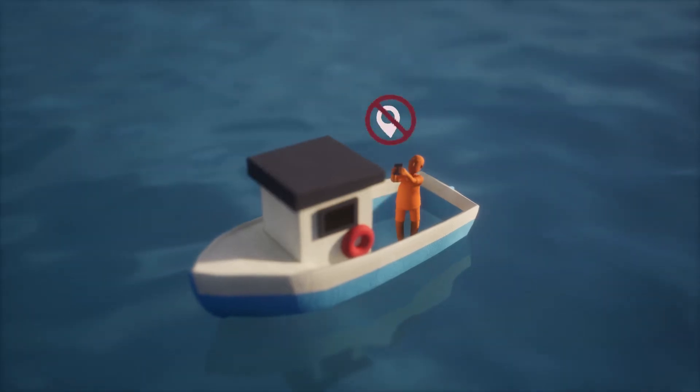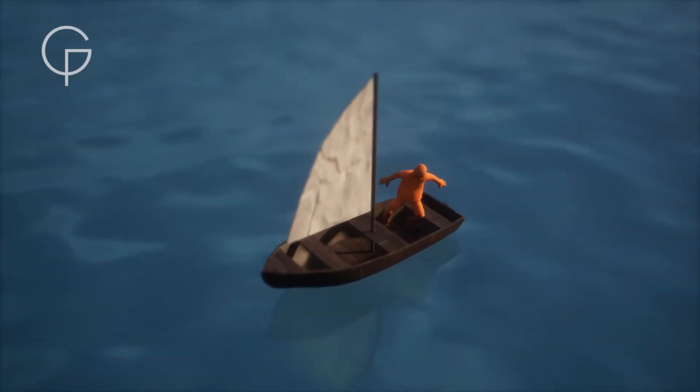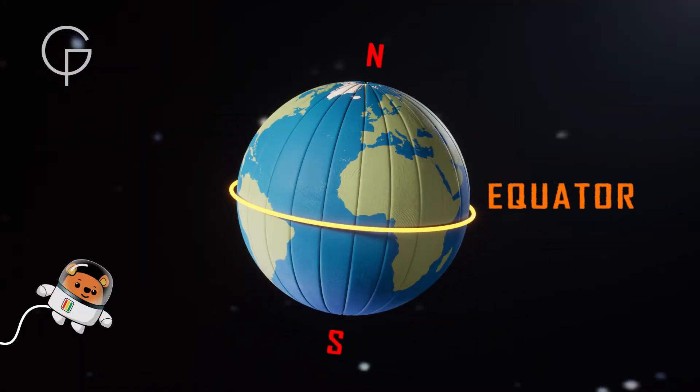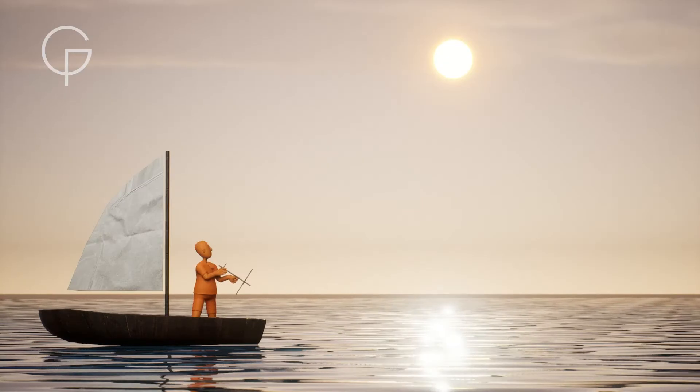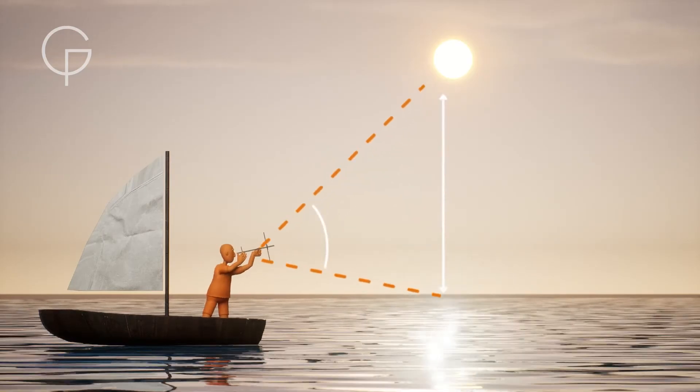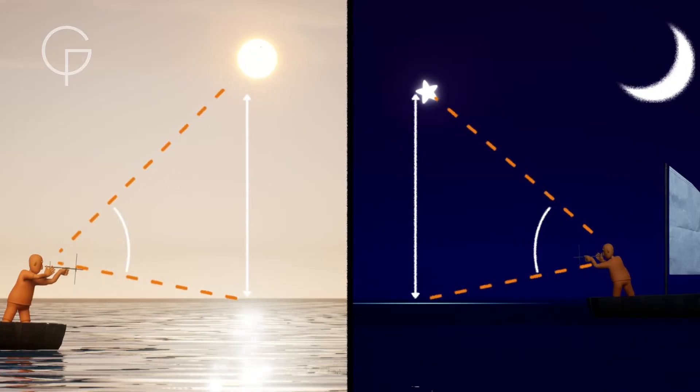Before the time of GPS and smartphones, it was difficult for sailors to know their precise location at sea. Finding latitude was fairly easy. All they needed to do was find the angle between the horizon and the midday sun, or Polaris if done during the night.